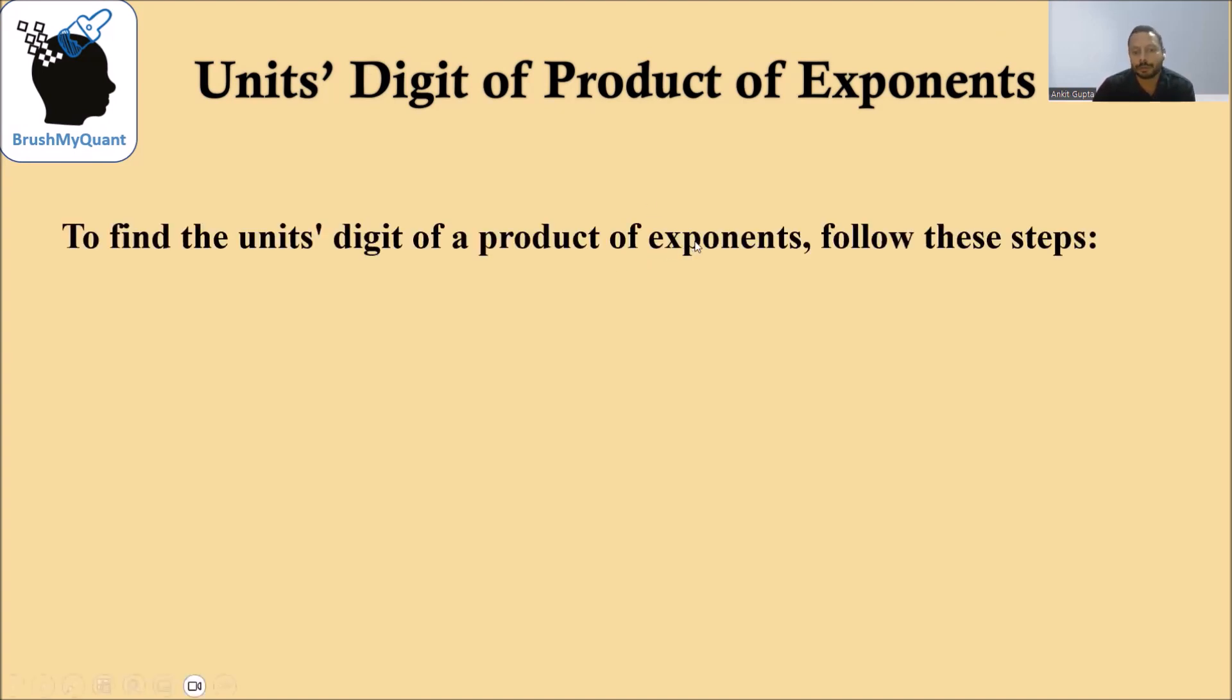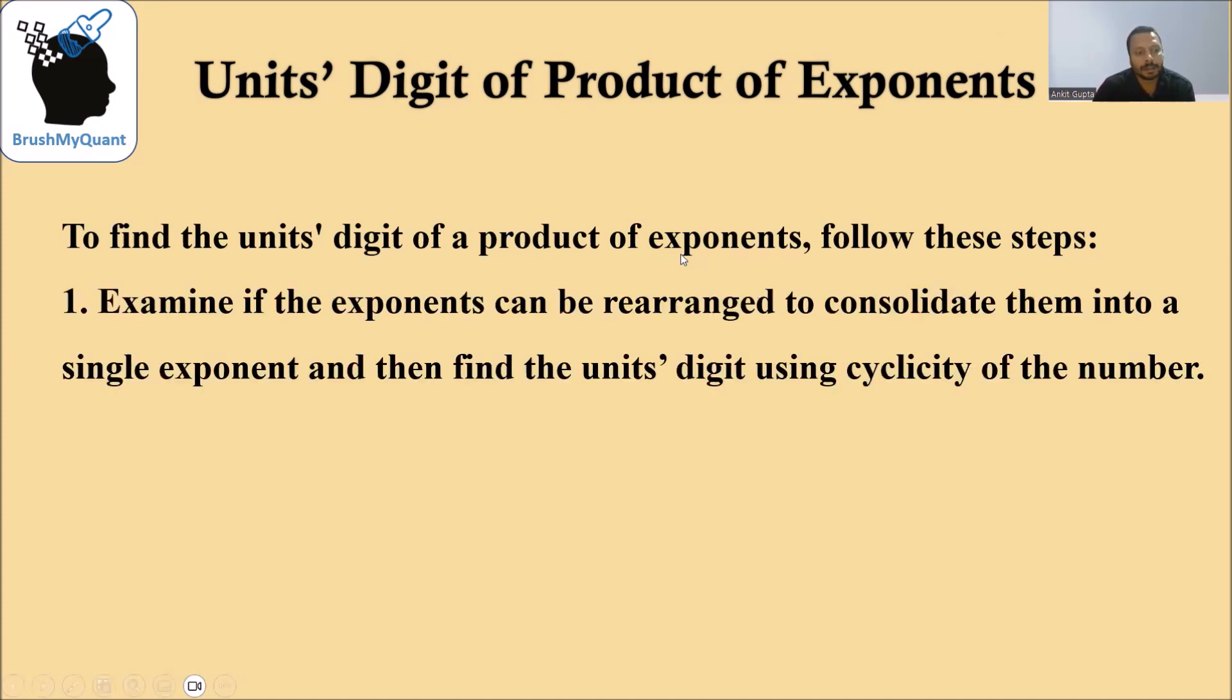To find the units digit of product of exponents, we need to follow the following steps. Examine if the exponent can be rearranged or consolidated into one single exponent. If you are able to do that, then we can just find the units digit using the cyclicity of the number.